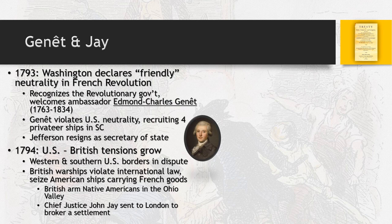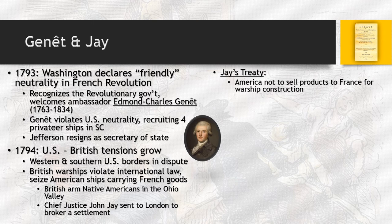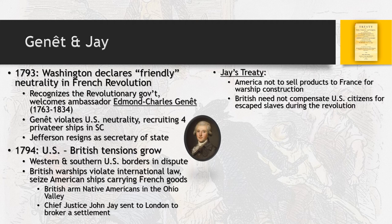Chief Justice John Jay is sent to London to broker a settlement, resulting in Jay's Treaty. It says America will not sell warship construction materials — nails, wood, etc. — to France. In return, Britain is not required to compensate U.S. citizens for any slaves who escaped during the Revolution. For Southerners in particular, this is a major disservice — essentially telling people waiting on compensation that it's not coming.